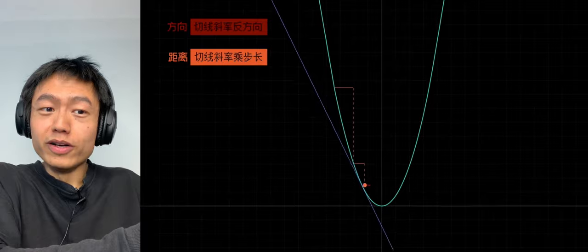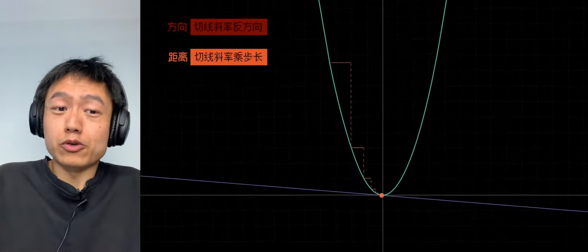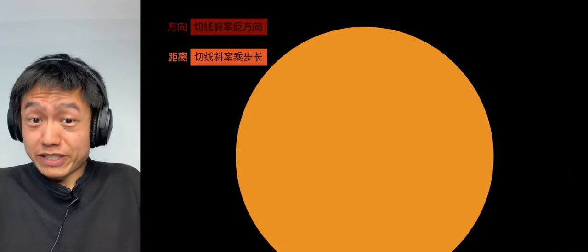This is the process of letting the machine go down the hill on the function with only one variable. Place the ball, select the step size, find the direction and distance according to the gradient, iterate it several times, and nailed it.